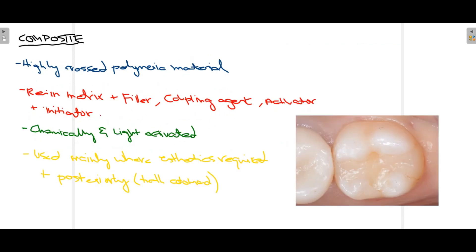On the other hand, when we talk about composite, you can see in this picture the restoration that has been placed matches the color of the tooth. Composite is an aesthetic restorative material that can be placed anywhere in the mouth — in anterior as well as posterior teeth. Anteriorly, composite is more beneficial because when you smile your anterior teeth are visible, and nobody can discern whether there is a restoration present or a natural tooth, as the color is the same.